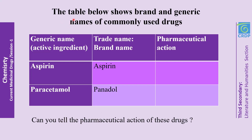The table below shows brand and generic names of commonly used drugs. We will see two kinds of drugs: aspirin and paracetamol. Aspirin and paracetamol are the generic names, or active ingredients. Aspirin has a brand name which is also aspirin, and paracetamol has a brand name which is Panadol. Can you tell the pharmaceutical action of these drugs?